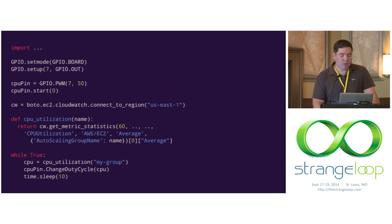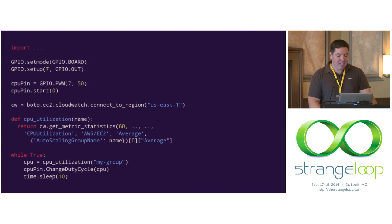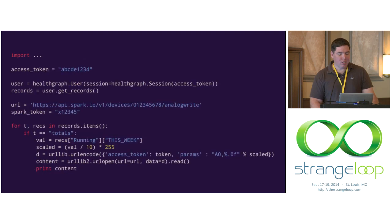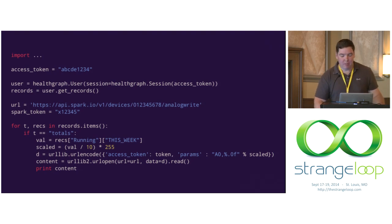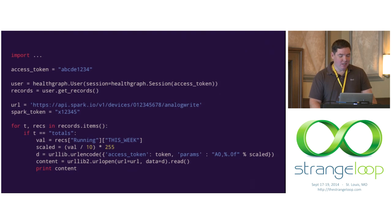Here's that same example on the Raspberry Pi — basically the exact same code. Since it's still Python, nothing really changed except how we interact with the device. The PWM is a little more complicated to set up here, but otherwise the same. And just to round it out, here's an example with the Spark Core using their API over the web — this is using Fitbit/RunKeeper instead of CloudWatch. I'm looking at my total miles run the last week, which is zero, but hopefully that's going up.